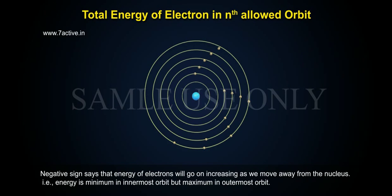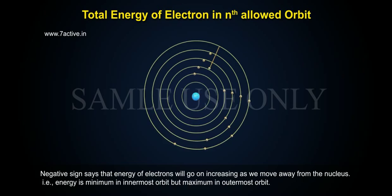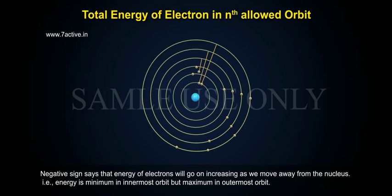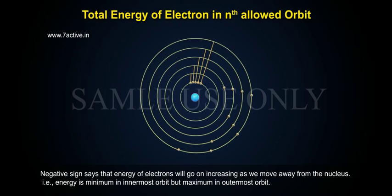Negative sign says that energy of electrons will go on increasing as we move away from the nucleus. That is, energy is minimum in innermost orbit, but maximum in outermost orbit.